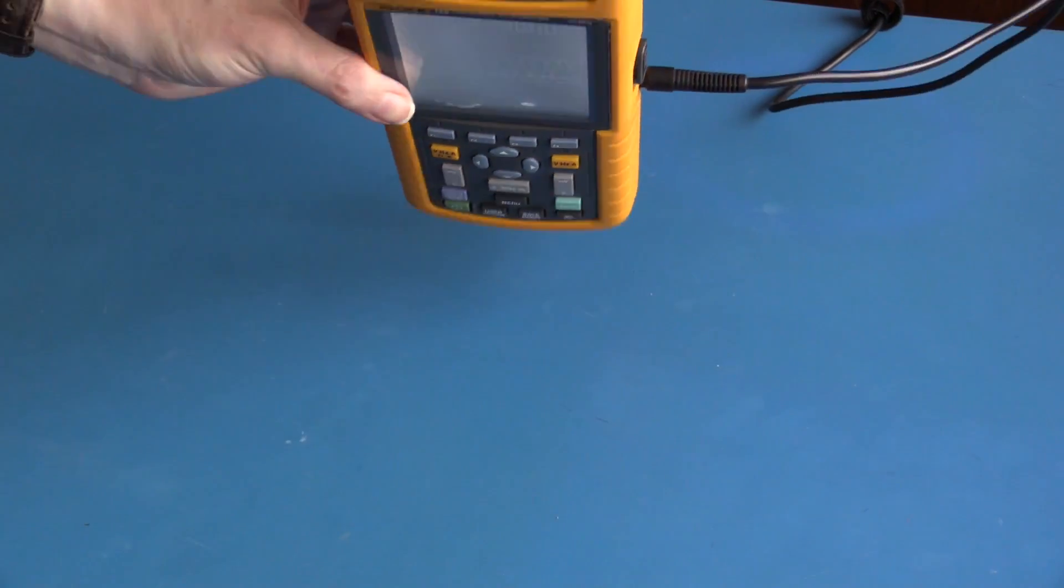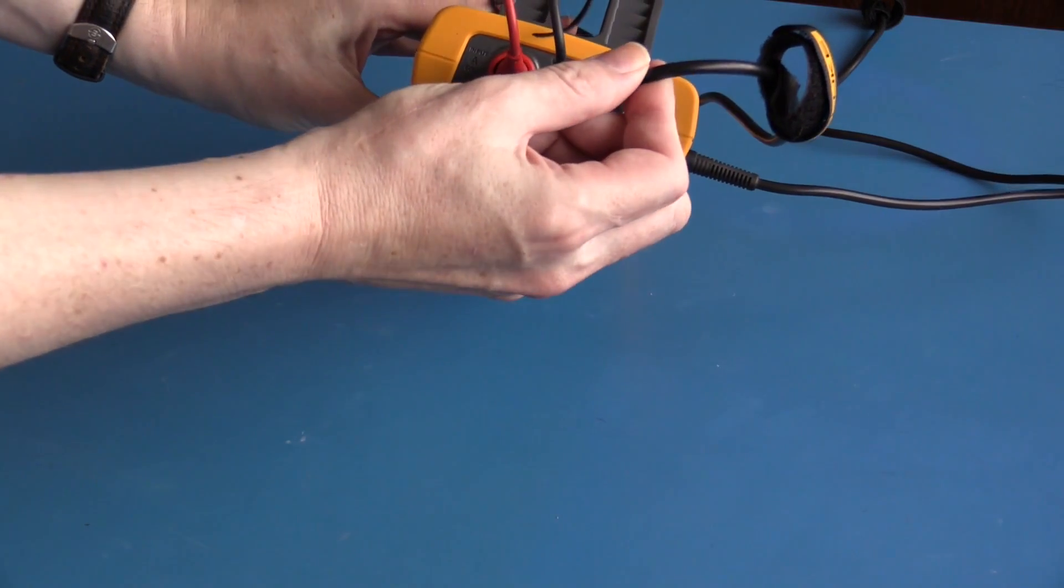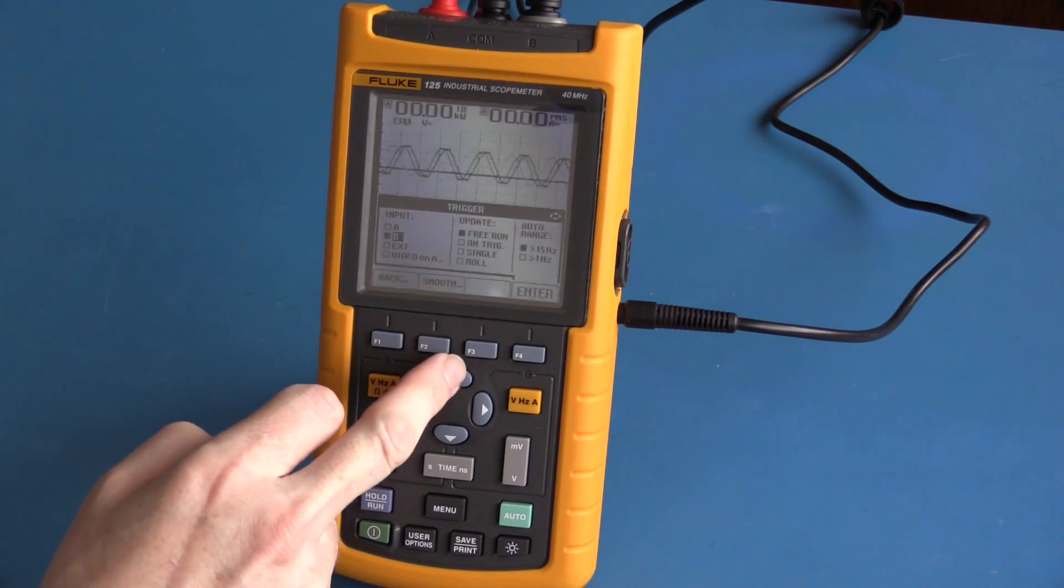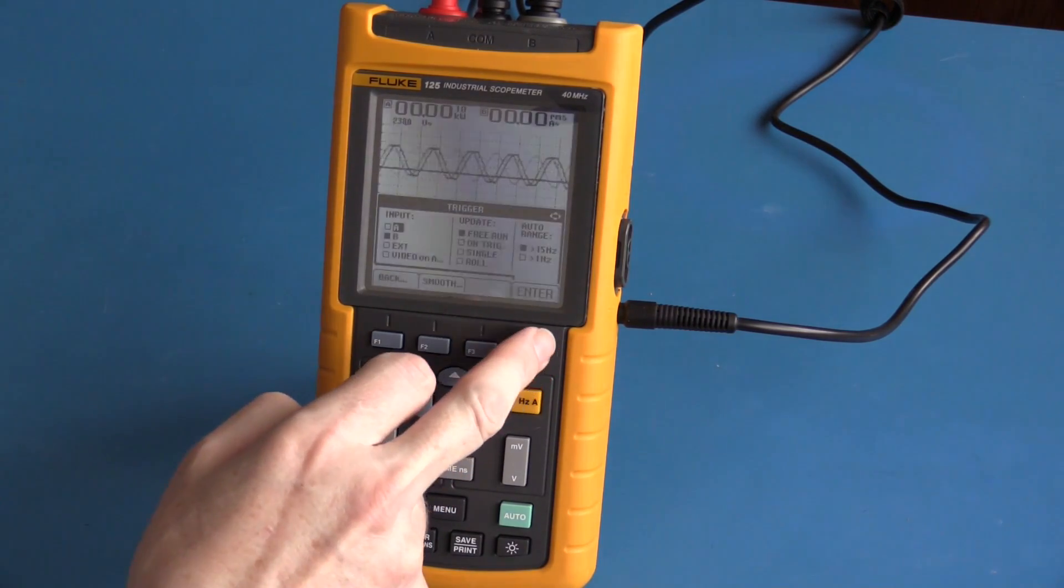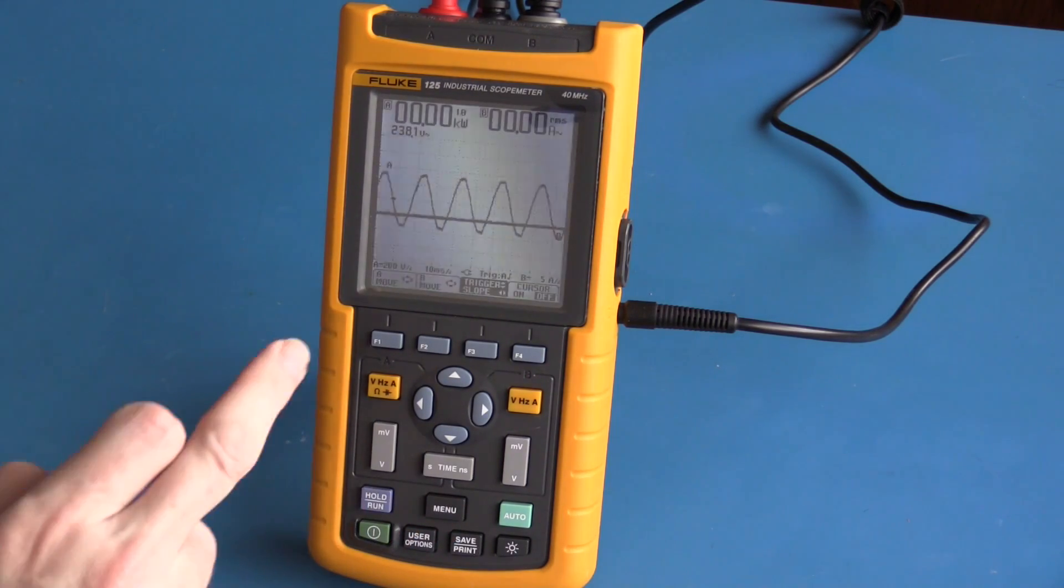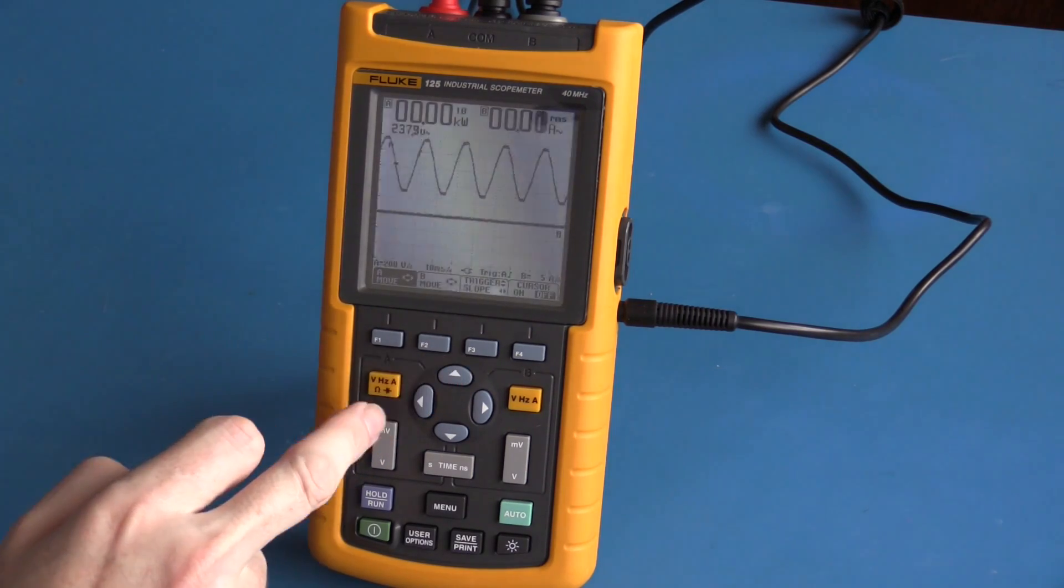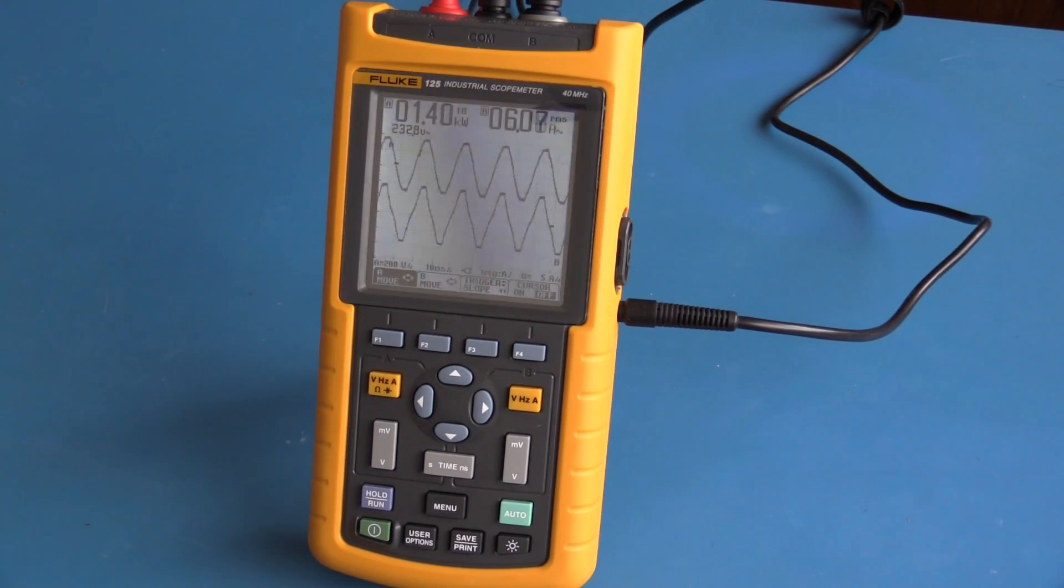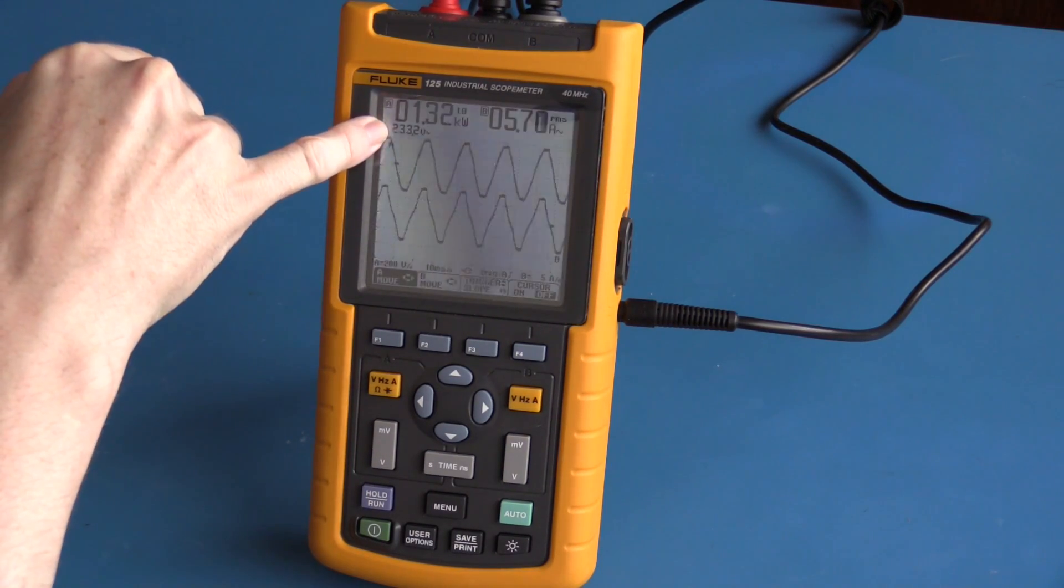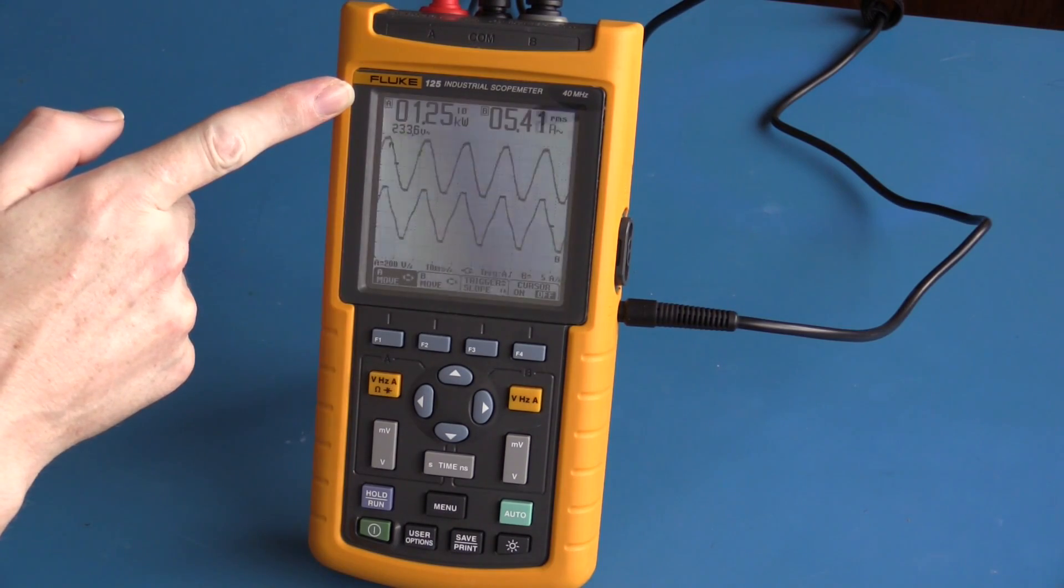To take a power measurement I'm now using all three inputs, voltage and my current clamp. I will trigger on channel A. I will then move the waveform channel A up. I can now see on my screen both the voltage waveform and the current waveform. 203 volts, 5.5 amps, and approximately 1.2 kilowatts.